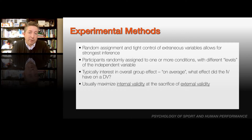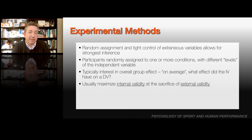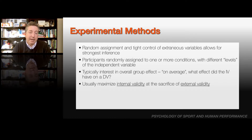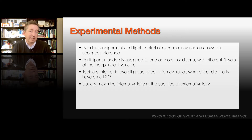There are also experimental methods, which are often used in sports psychology. In experimental methods, we have random assignment and tight control of extraneous variables that give us the strongest inference about the research question. Participants get randomly assigned to one or more conditions with different levels of the independent variable, such as the presence or absence of an intervention. For example, we may be interested in how the practice of visualization impacts motor performance, like shooting free throws in basketball.